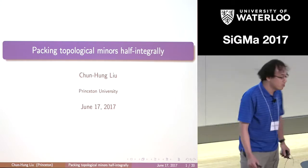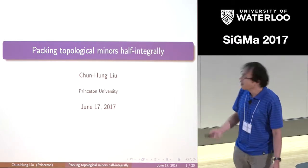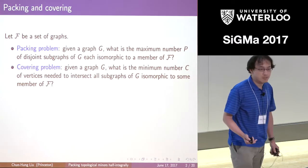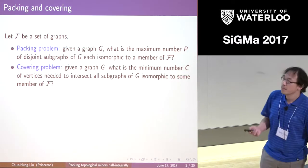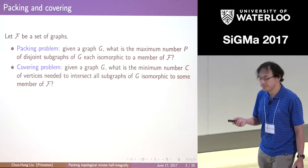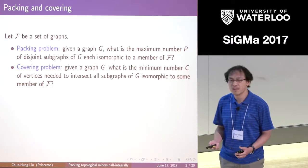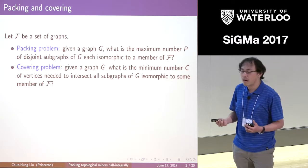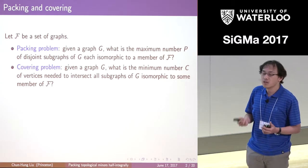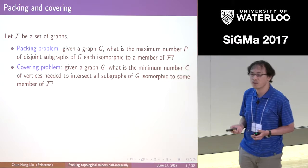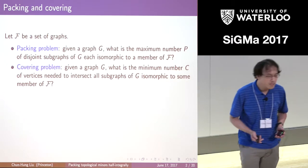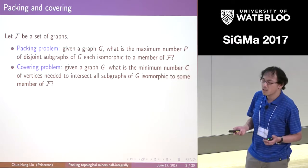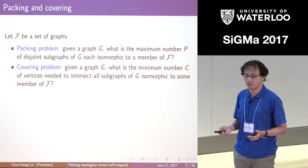I'll talk about packing topological minors with half-integrality. So let's consider two optimization problems: one is called a packing problem and the other is called a covering problem. We first fix a family of graphs F. The packing problem asks, given a graph G, how many disjoint subgraphs can I find such that each is isomorphic to a member of F? And the covering problem asks how many vertices do I need to touch all such subgraphs?